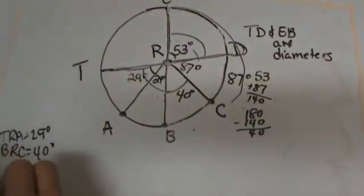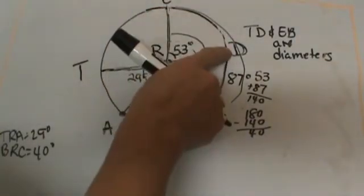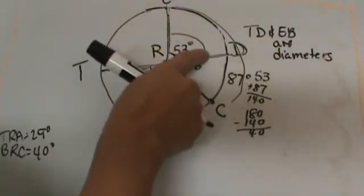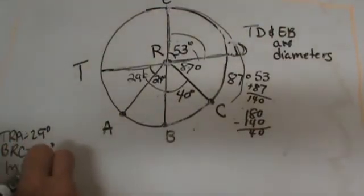Now we are looking for an arc. ED is this arc up here. We know it is the same as the central angle. So if this angle is 53, that means that arc must also be 53. That one was an easy one.